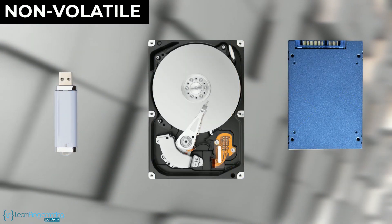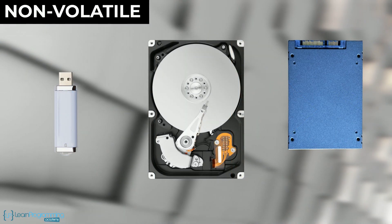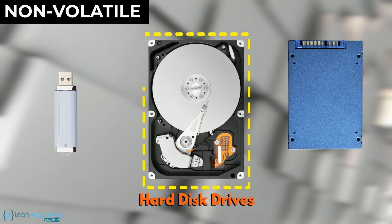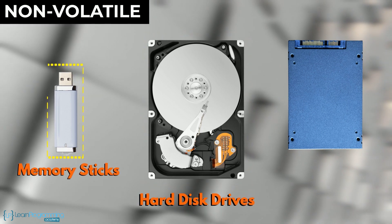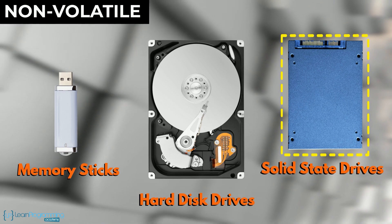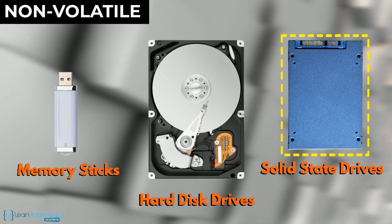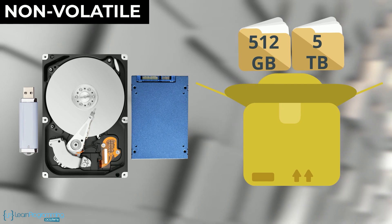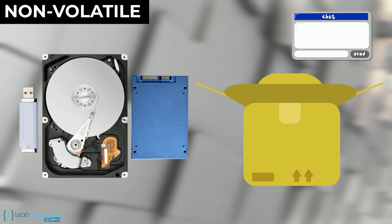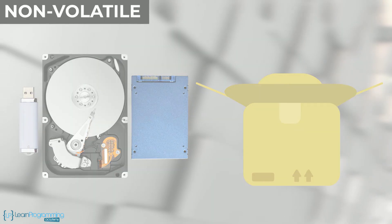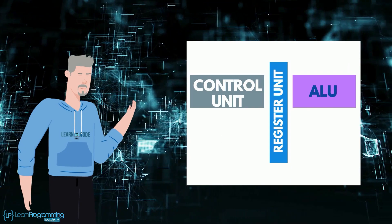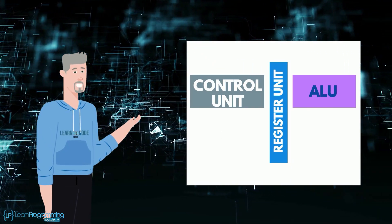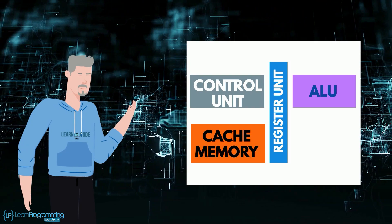A few examples of non-volatile memory used for retaining data, software programs, and apps over time are hard disk drives, memory sticks, and solid state devices — SSDs. These devices are designed to hold large amounts of gigabytes or even terabytes of data, software programs, and apps. Now while we're on the topic of memory, there's one more concept found in most of today's microprocessors or CPUs, and that's cache memory.